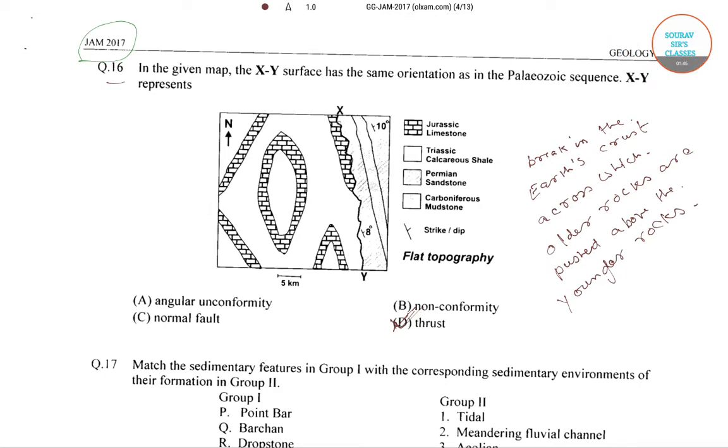So this XY surface represents a thrust, that is a break in earth's crust across which the older rocks are pushed above the younger rocks.